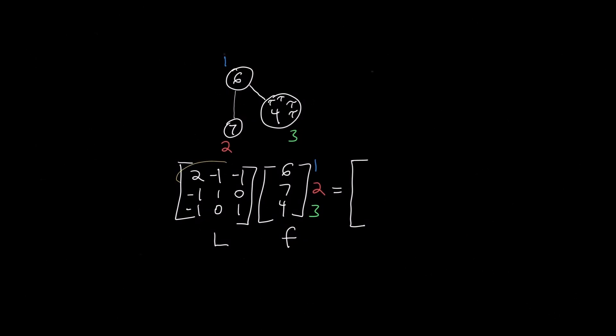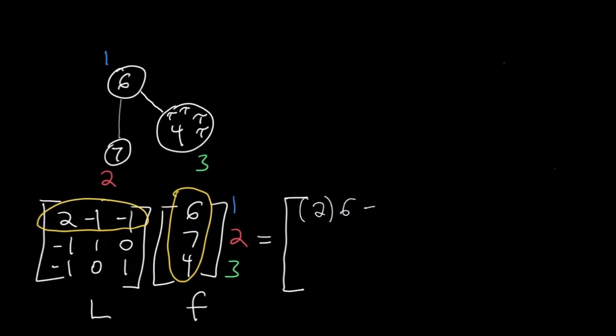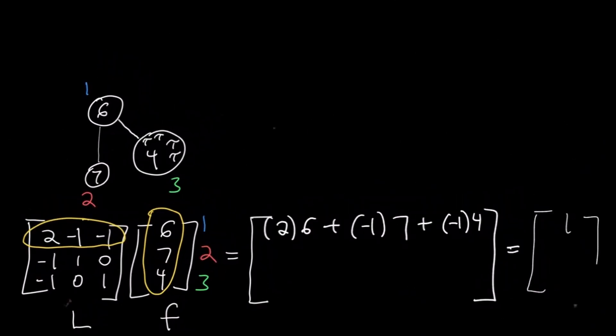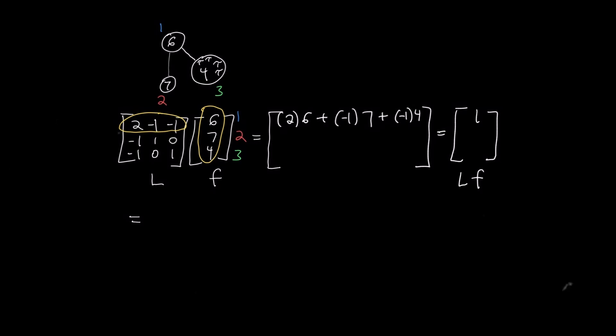We just take each row of L and multiply each element in that row by its corresponding element in F. This outputs a value in the vector LF.